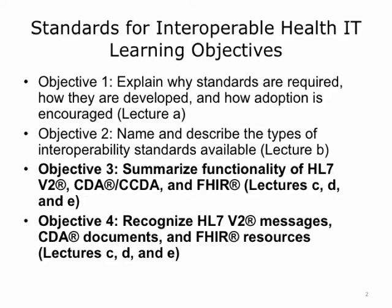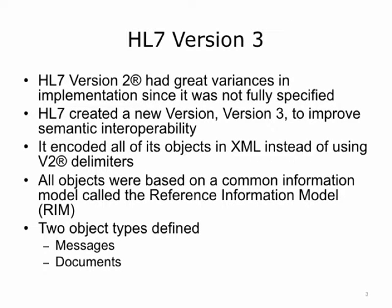This lecture will focus on HL7 CDA and CCDA documents. HL7 Version 3 was developed because of problems with HL7 Version 2. Version 2 had great variance in implementation since it was not fully specified. With Version 3, HL7 tried to be much more precise to reduce variances between implementations. All V3 messages and documents were derived from a single information model to ensure base consistency, encoded using XML, or Extended Markup Language, a popular encoding language for the web.